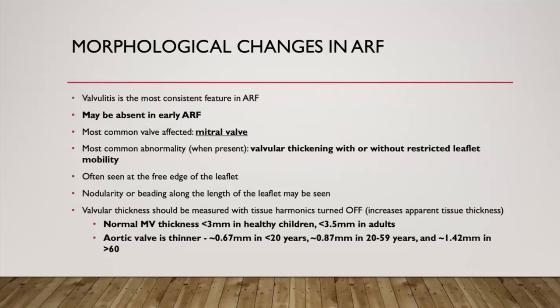With regards to morphological features of rheumatic fever, valvulitis may be difficult to see morphologically early in acute rheumatic fever, so its absence doesn't rule out the diagnosis — that's why Doppler should be used. The most common valve affected is the mitral valve. When present, the most common abnormality is valvular thickening, with or without restricted leaflet mobility. Valvular thickening is often seen at the tip edge of the leaflet, and as rheumatic disease progresses, we see nodularity and further calcification, though nodularity or beading along the leaflet can appear even early on.